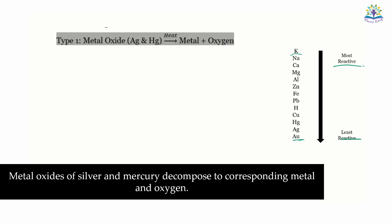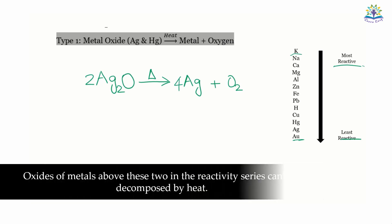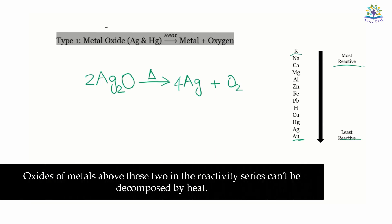Metal oxides of silver and mercury decompose to give the corresponding metal and oxygen. For example, silver oxide decomposes to form silver and oxygen. Oxides of metals above these two in the reactivity series cannot be decomposed by heat.